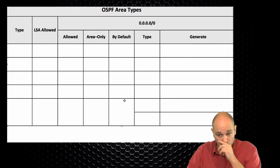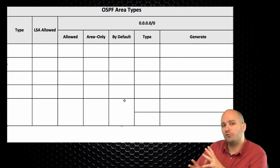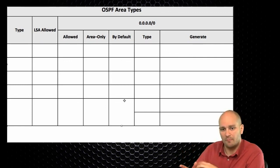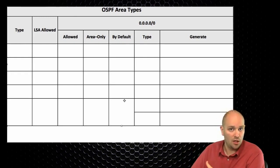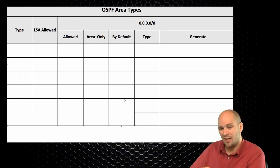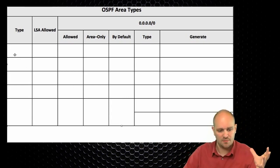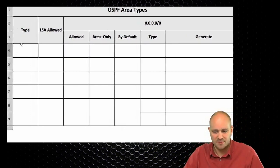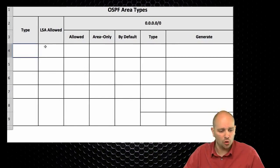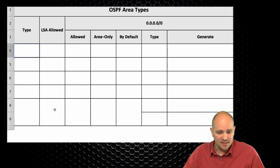In this table, we want to pay great attention to the behavior of the default route in OSPF, because it's not exactly straightforward. We'll list the possible area types, the LSAs allowed in each area, and then examine the behavior of the default route.